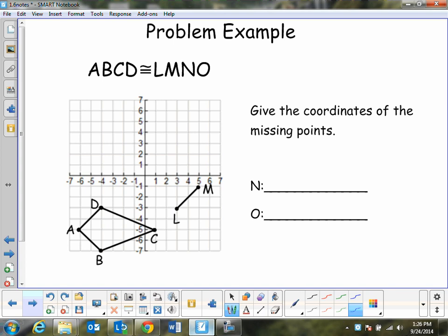So C corresponds to N, that's right here. And so N would probably be somewhere out here. So if I count the horizontal distance from B to C, 1, 2, 3, 4, 5, and then down 1, 2. So that's what you want to do there. 1, 2, 3, 4, 5, down 1, 2.